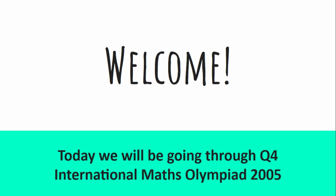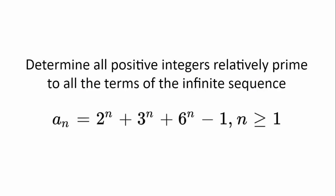Welcome. Today we'll be going through question 4 from the International Maths Olympiad 2005. Determine all positive integers relatively prime to all the terms of the infinite sequence a_n equal to 2 to the power of n plus 3 to the power of n plus 6 to the power of n minus 1, where n is greater than or equal to 1.